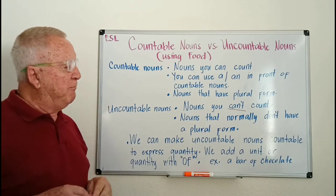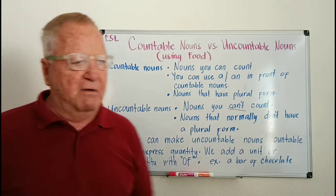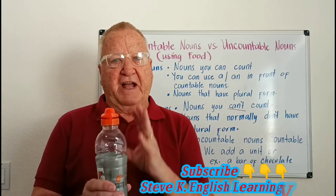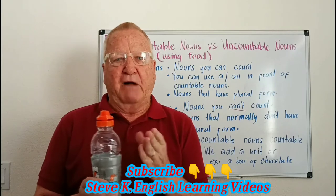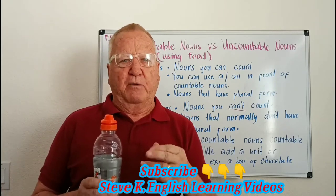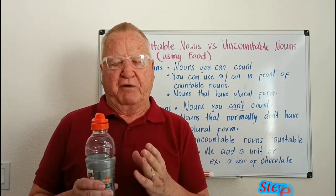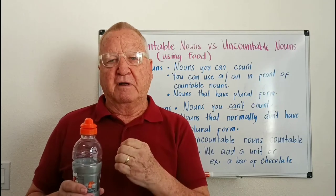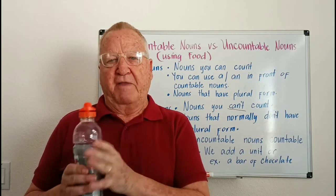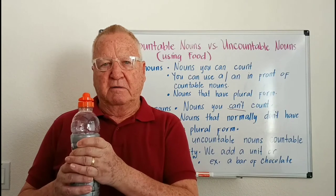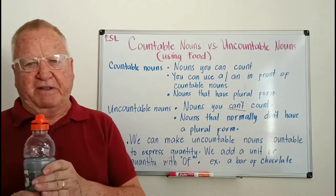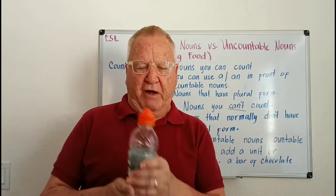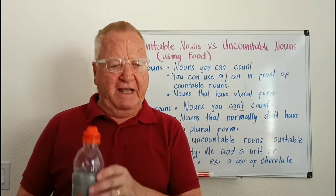For example, a bottle of water. The water inside can't really be counted — we can't say '10 waters.' But we can say 'a bottle of water,' and that makes the bottle countable. So we're turning an uncountable noun into a countable expression using 'a bottle of,' but not the water itself.